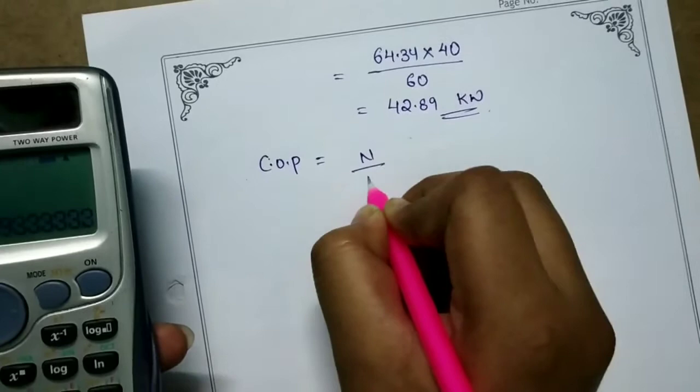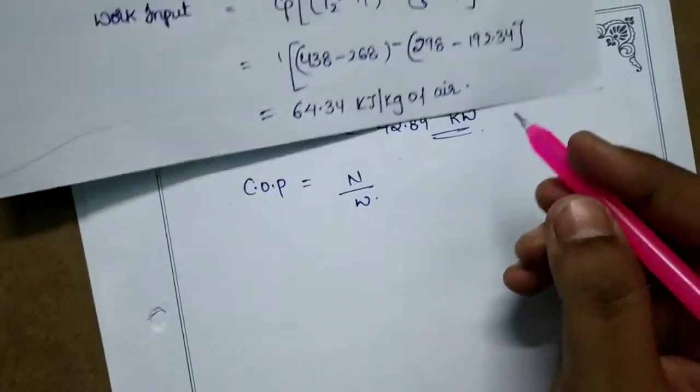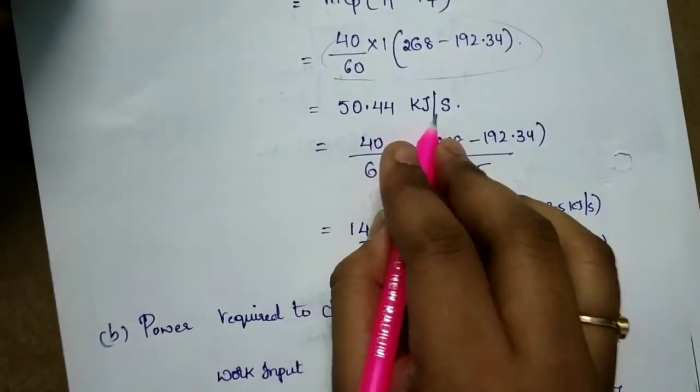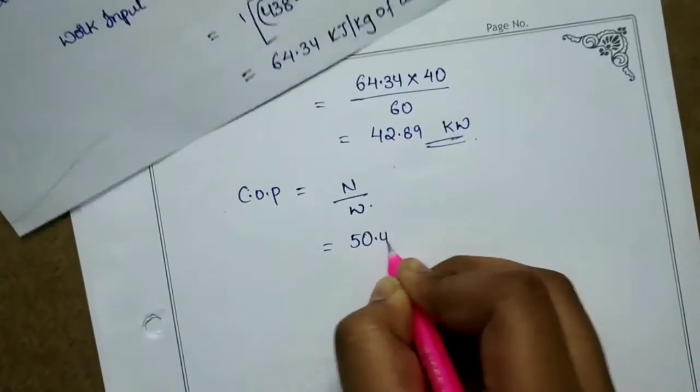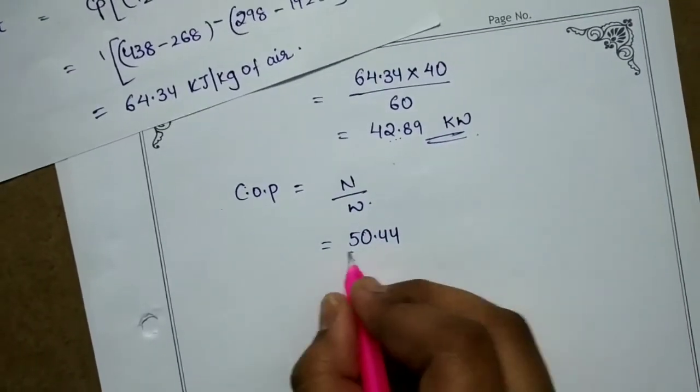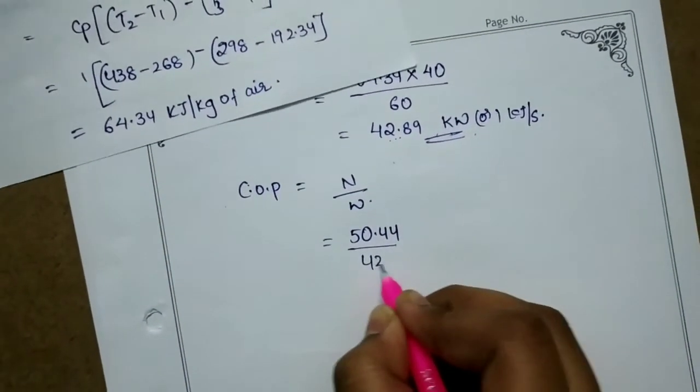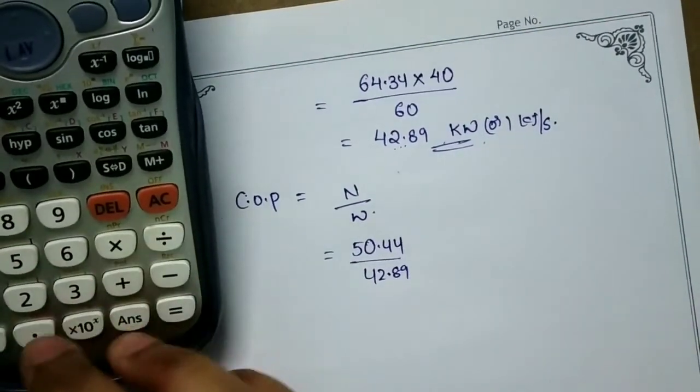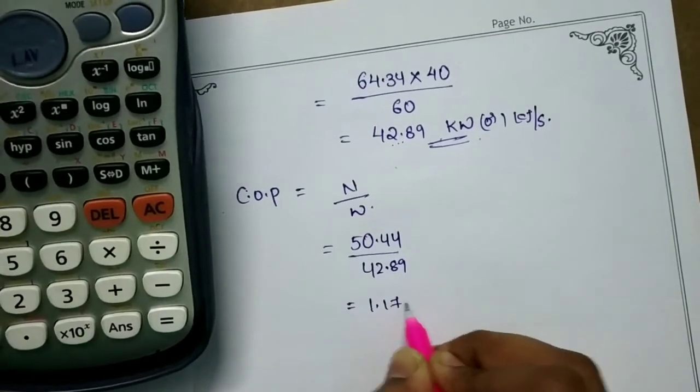Now COP is equal to refrigeration effect by work. Kilowatts and kilojoule per second, so the refrigeration effect is 50.44 kJ per second, and work input is 42.89 kilowatts. So 50.44 divided by 42.89 equals 1.17 COP.